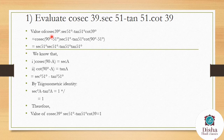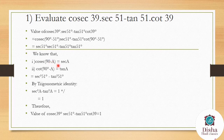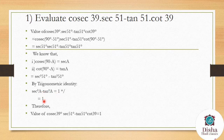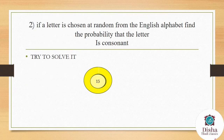To evaluate cosec 39 × sec 51 − tan 51 × cot 39: we convert cosec 39 into sec 51 and cot 39 into tan 51 using the identities cosec(90−a) = sec a and cot(90−a) = tan a. This gives sec²51 − tan²51, and by the trigonometric identity sec²a − tan²a = 1, the answer is 1.